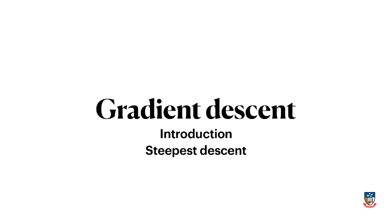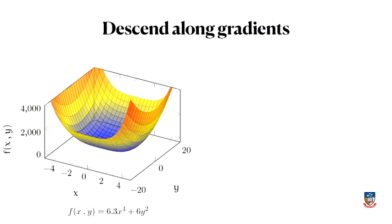In previous videos, we've talked about applications like neural networks, and I've said that you have to do optimization on these things. Literally how your deep neural network learns to predict images of cats and dogs is by doing optimization under the hood — it's literally doing a variant of gradient descent. This is a key practical algorithm.